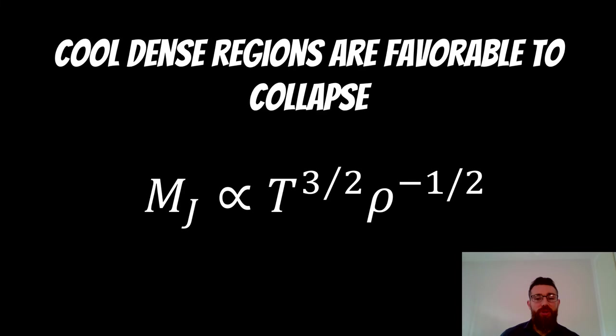Now what this also shows you is that cool dense regions are favorable to collapse. So if you decrease the temperature, your Jeans mass will also decrease. So smaller regions will be more susceptible to collapse when they're colder.